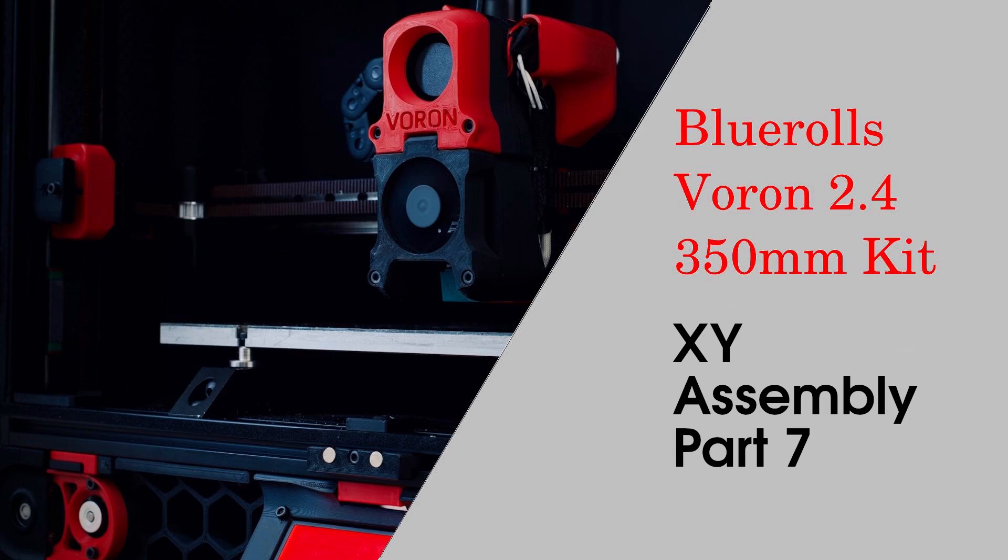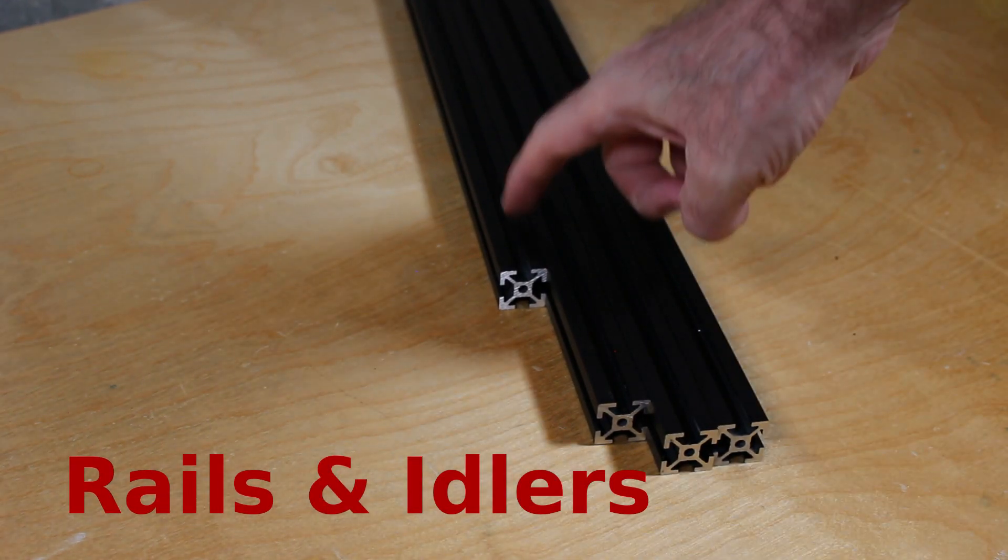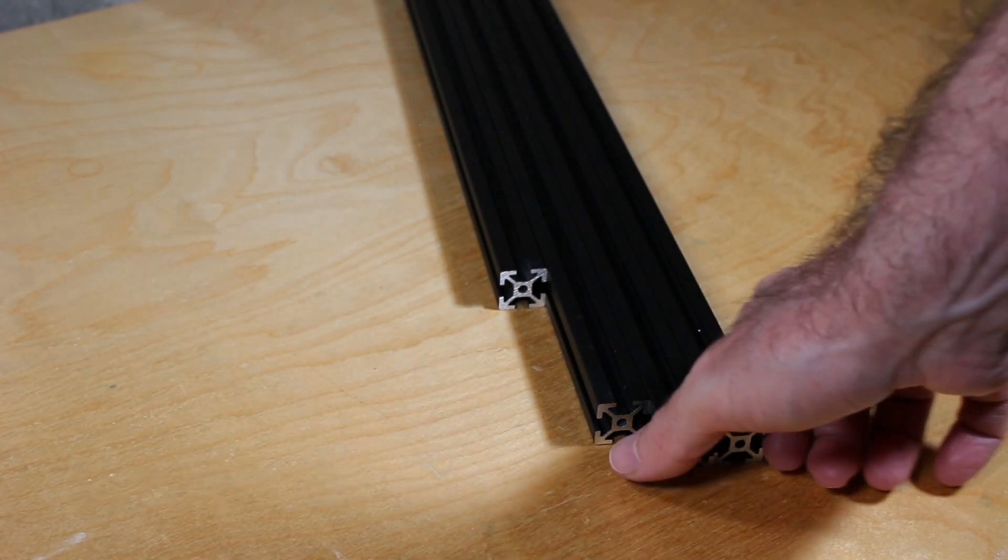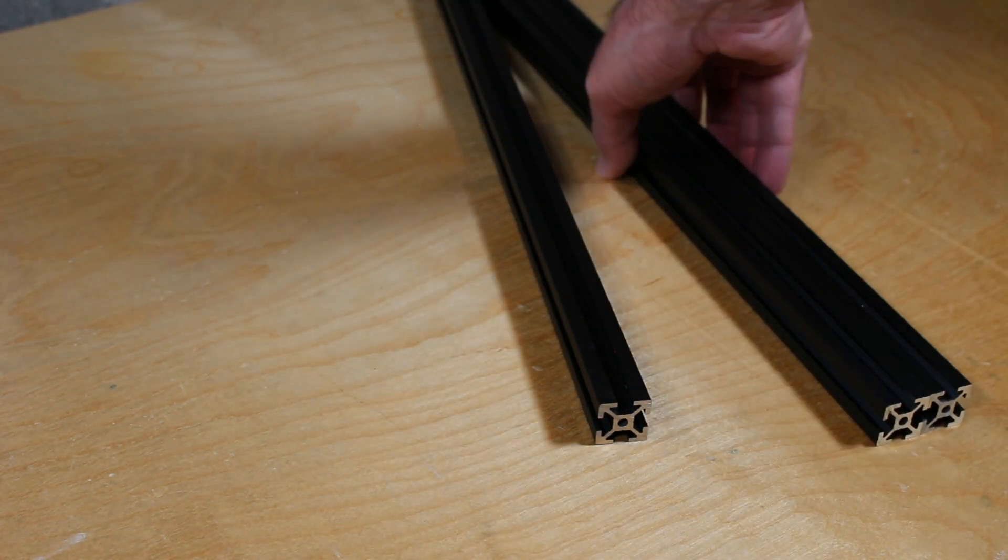Welcome to this Voron 2.4 build where we construct the XY assembly. You should have four extrusions left. Take the two largest and the smallest and put them aside as we won't be using them right now.